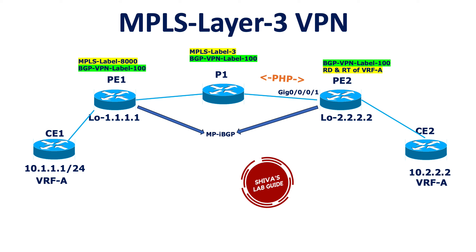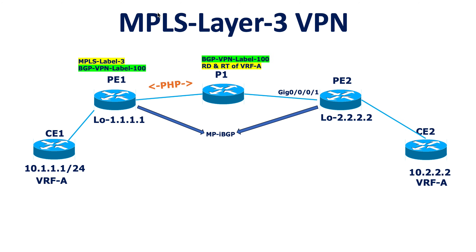PE2 then receives the packet with no MPLS transport label — only the BGP VPN label (NLRI). PE2 uses this to identify which VRF to use among potentially 1000 VRFs, and determines whether to import the route. This is the normal setup when the MP-IBGP session is configured between PE1 and PE2 using their loopback IPs.